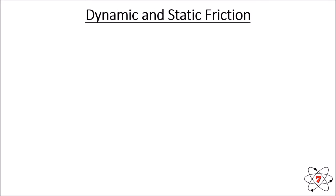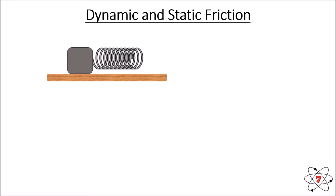Let's have a look at dynamic and static friction. Here we have a spring attached to a large mass resting against a wooden surface. We can apply a force of five newtons to that spring — and therefore to the block. However, the block is not moving.